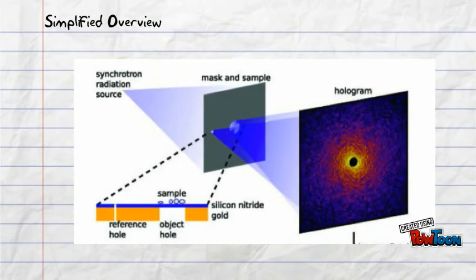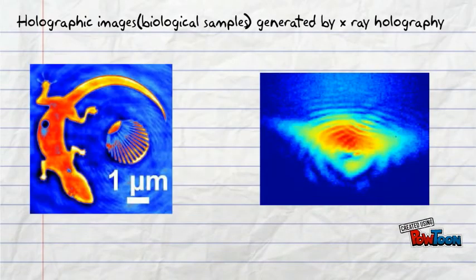A simplified overview would be the picture here, whereby the synchrotron radiation source is the source that produces X-rays. This system will permit the observation in real time, which would be incredibly useful for observing biological samples.